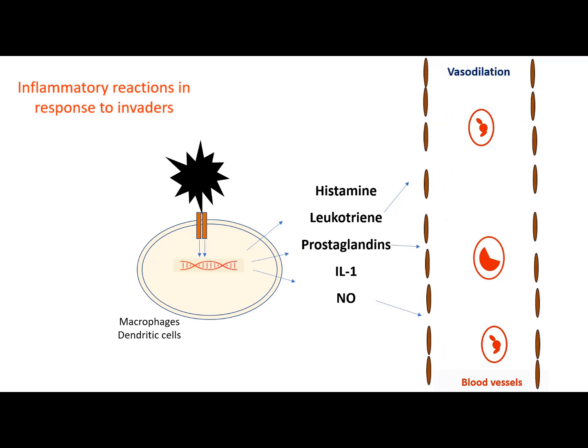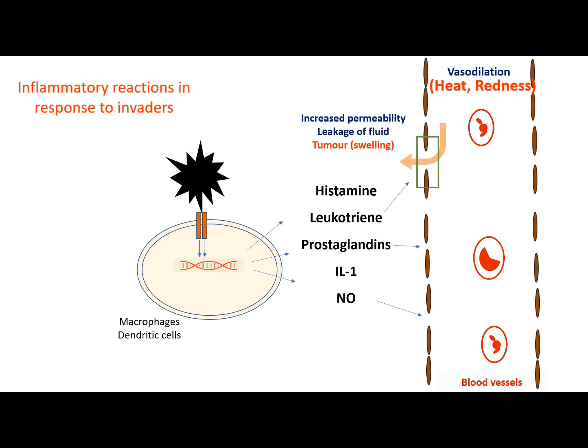They induce vasodilation which gives rise to redness and heat, the two cardinal signs of inflammation. Additionally, these mediators increase the permeability of nearby blood vessels, which results in leakage of fluid and inflammatory cells to the site of infection. The resulting swelling is the third cardinal sign of inflammation.